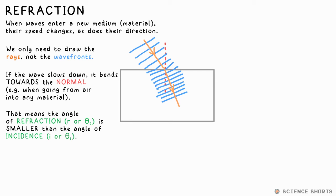That is, if it's at an angle to the normal, the line we draw perpendicular to the surface. If light slows down, it moves closer to the normal. So that means that the angle of refraction is smaller than the angle of incidence. Now, all of these angles are measured from the normal.